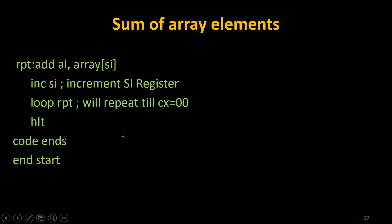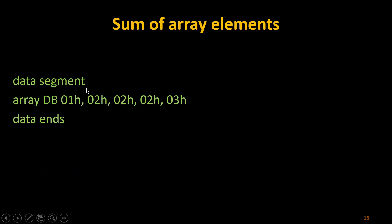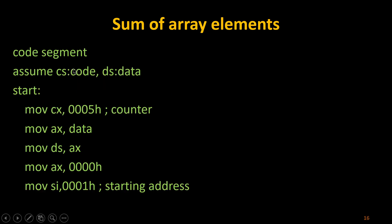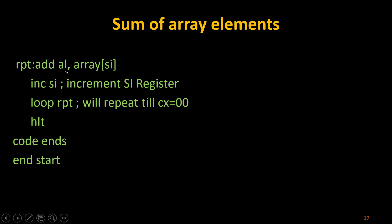Now the core part: ADD AL, array[SI]. I have an array, and with SI holding value 0001h, it takes the element at that position in the data segment. In the first iteration, element at position 01 is fetched. Since AX was reset to 0, I add array[SI] — the first element — to AL.